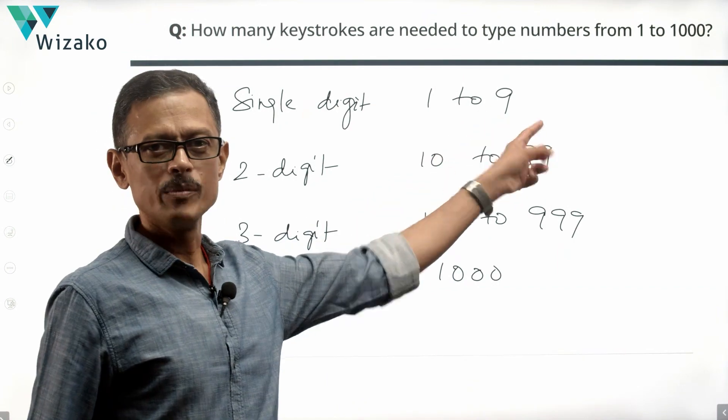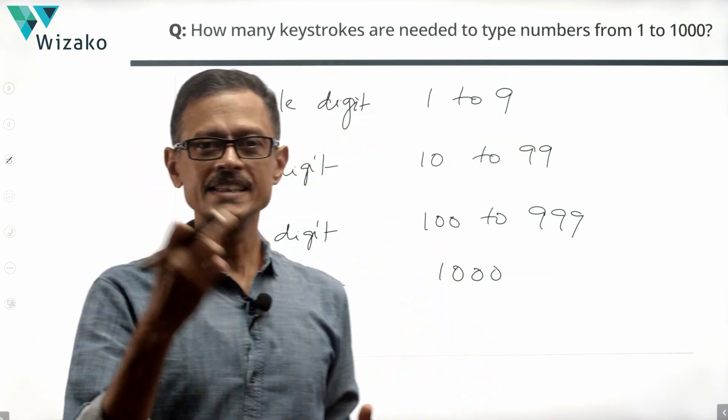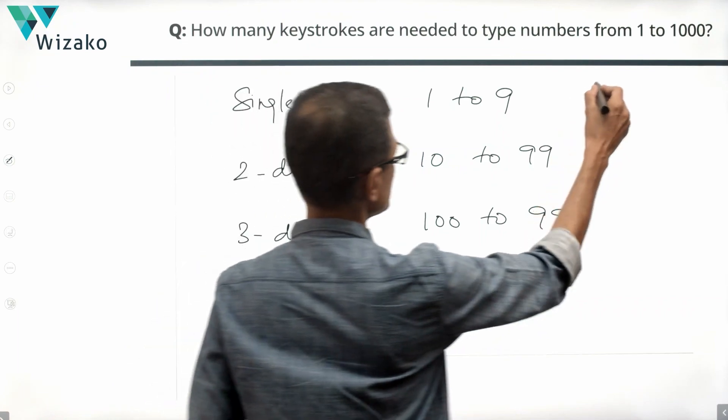This part is very easy. How many keystrokes are required to type numbers from 1 to 9? Each is a single digit number. So we're essentially going to need 9 keystrokes. I'm writing this as 9.